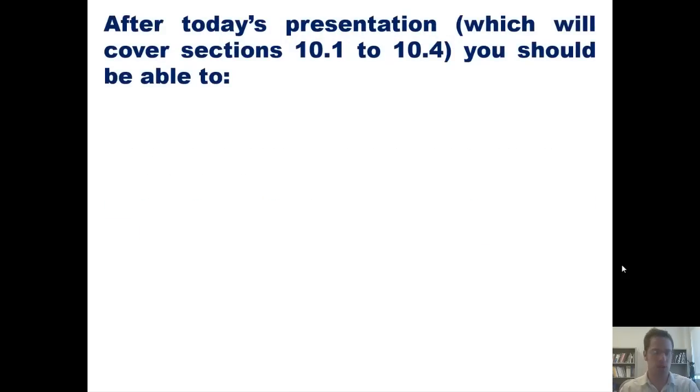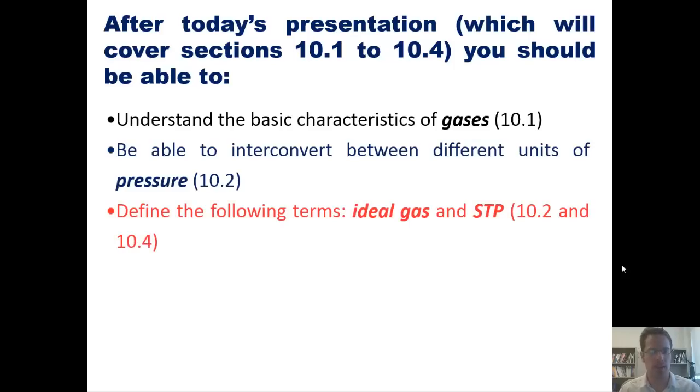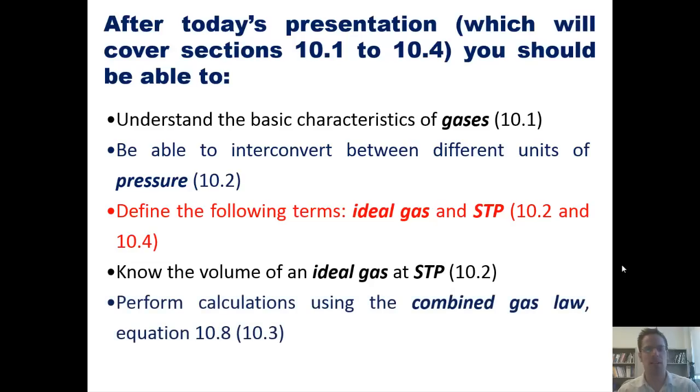After today's presentation, or series of presentations here in Chapter 10, which will cover sections one through four of our text, you should be able to do the following. First, understand the basic characteristics of gases, be able to interconvert between different units of pressure, define the following terms: ideal gas and STP, know the volume of an ideal gas at STP, and perform calculations using the combined gas law, equation 10.8 from our book, which I'll discuss later on.